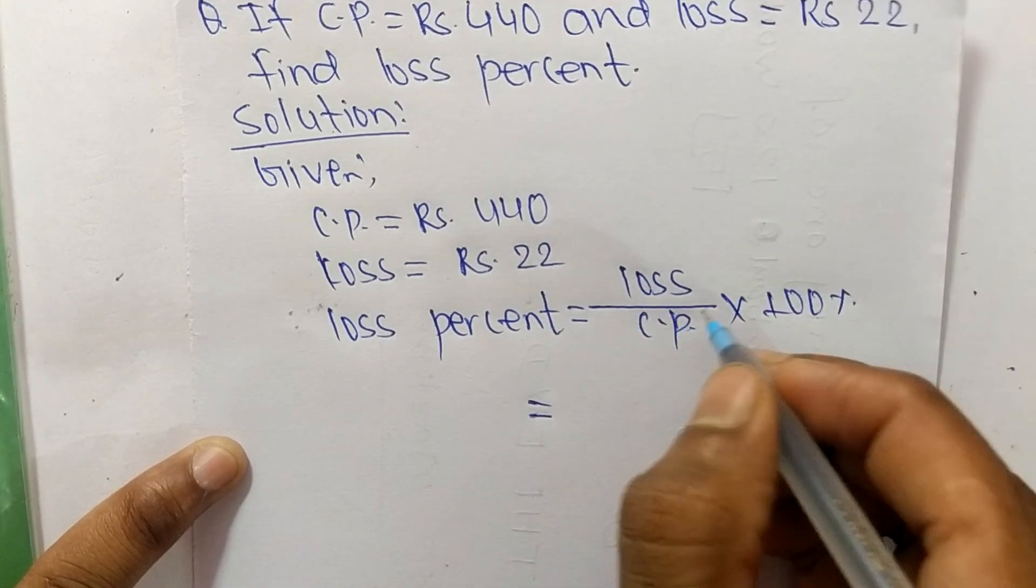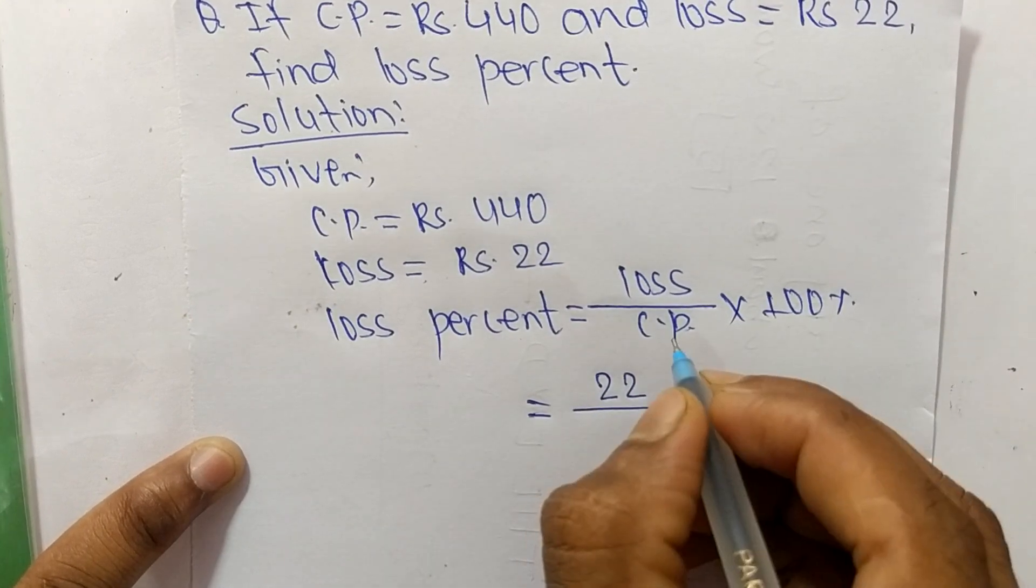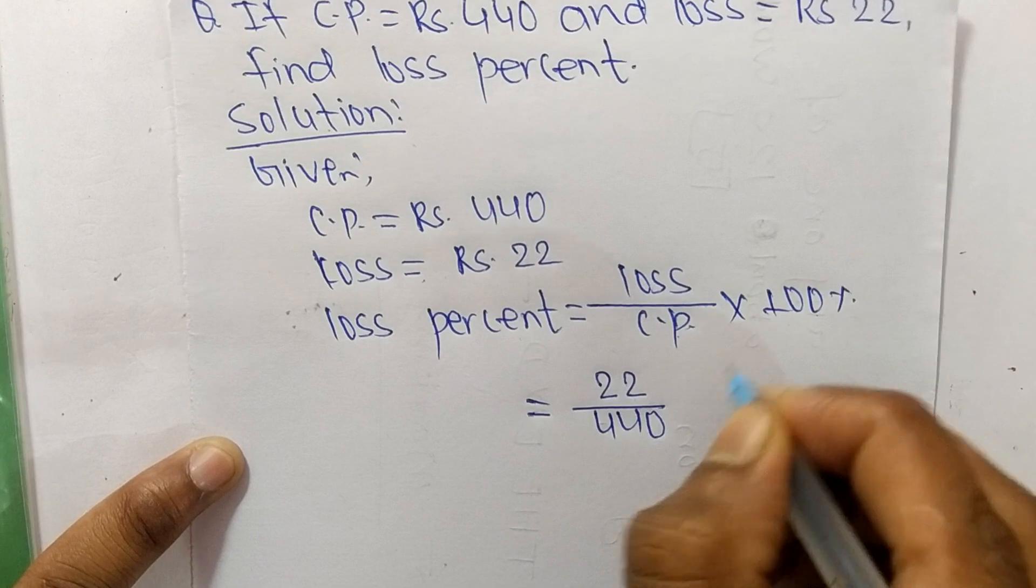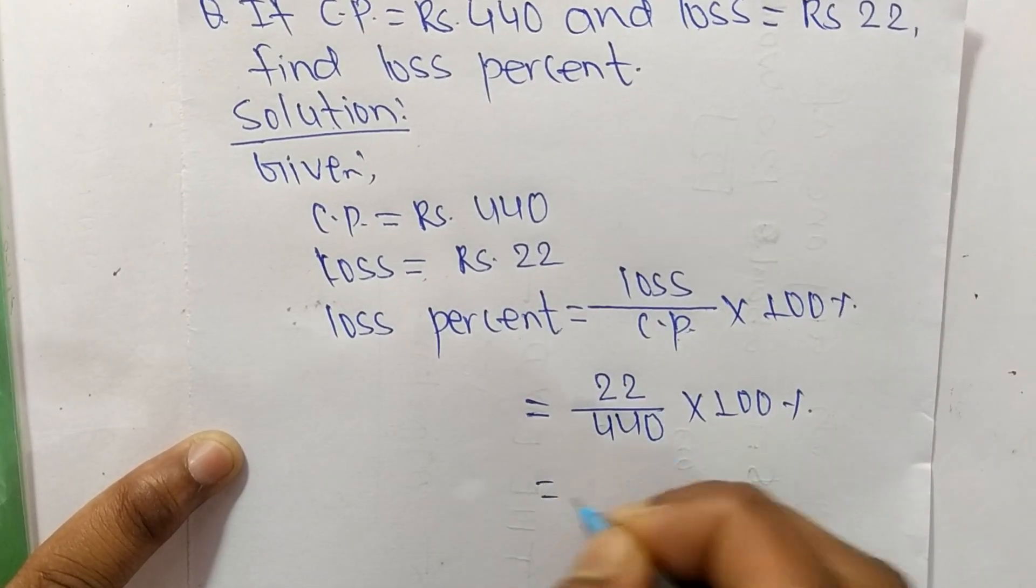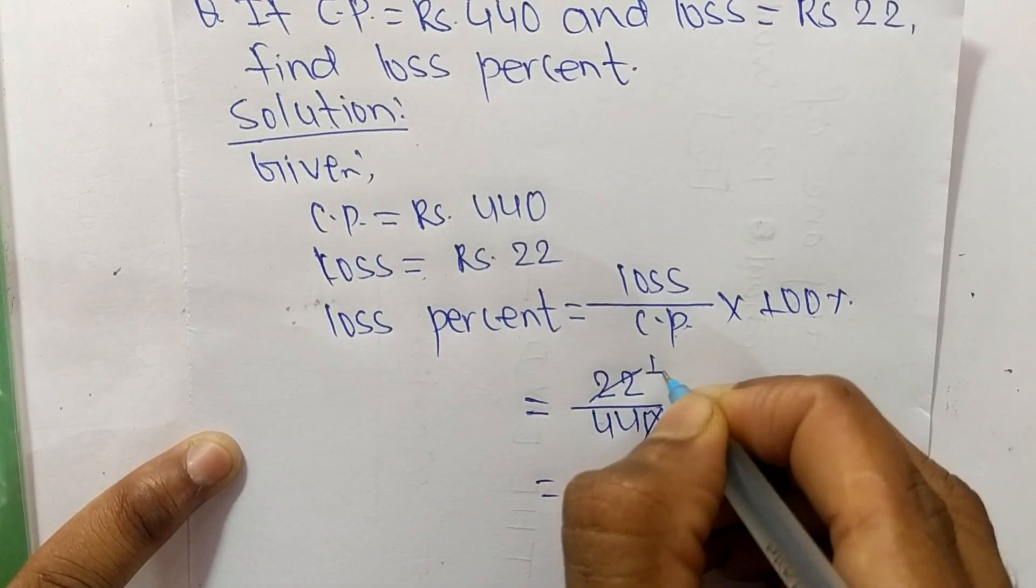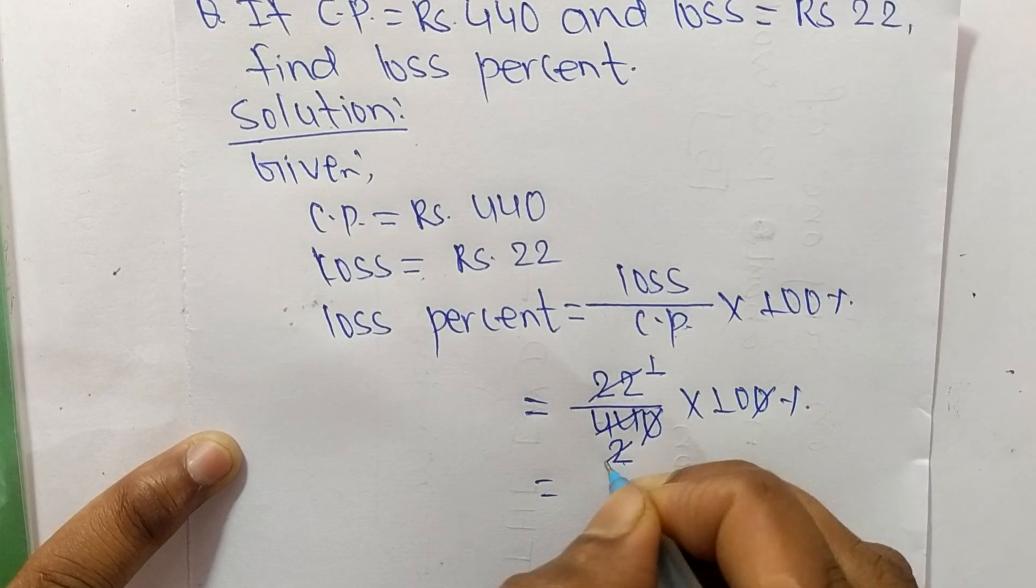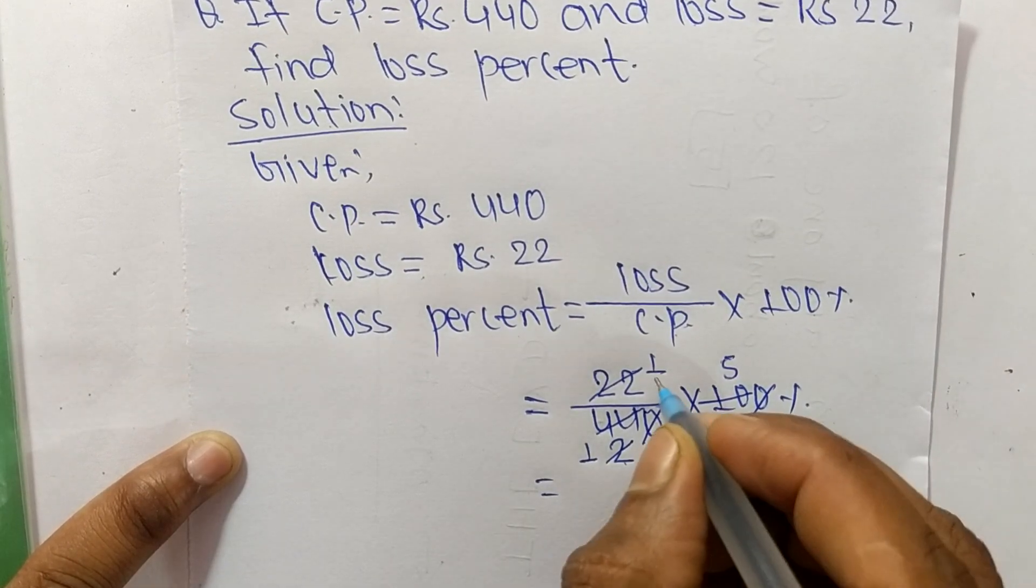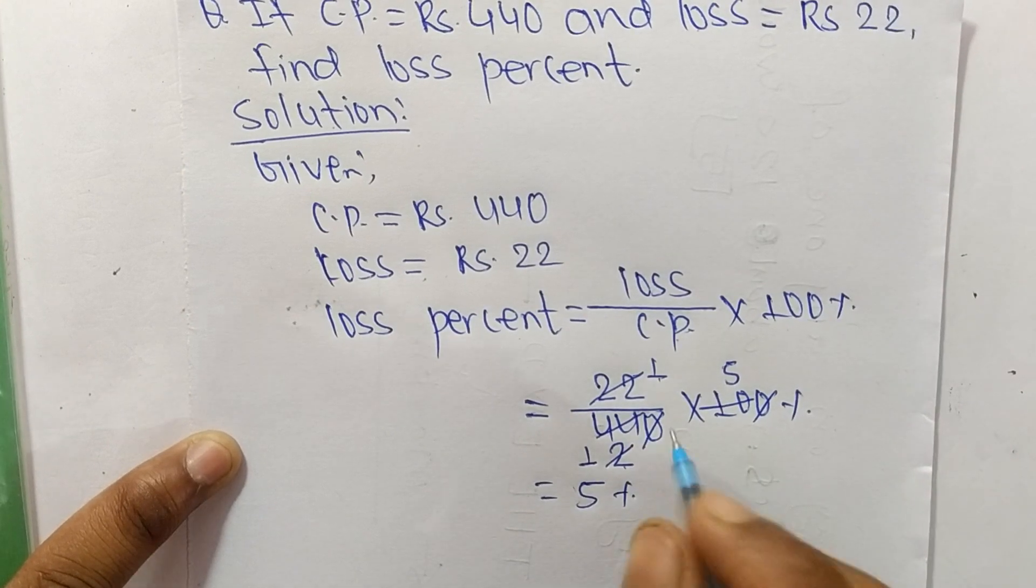Now we put its value. So loss is given here 22 and CP is given 440 and this 100 percent. So zero zero cancel. 22 times 1 means 22, 22 times 2 means it is 44. So like 2 times 1 means 2, 2 times 5 means 10. So 1 into 5 means it is 5%, so the total loss percentage is 5 percent.